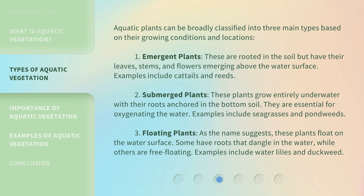Second, submerged plants. These plants grow entirely underwater with their roots anchored in the bottom soil. They are essential for oxygenating the water. Examples include seagrasses and pond weeds.